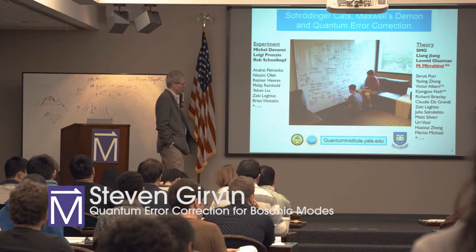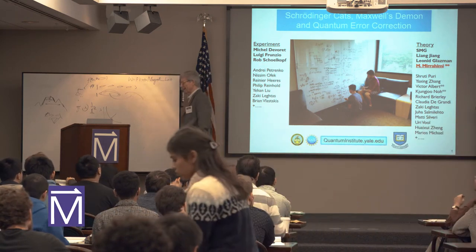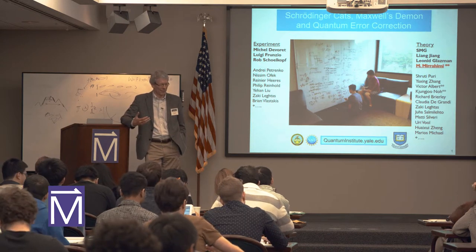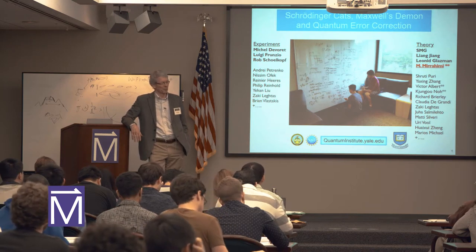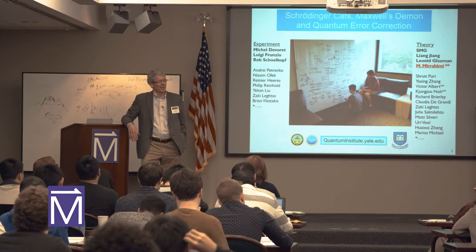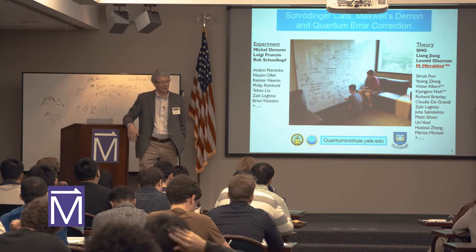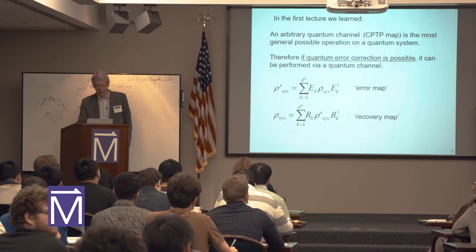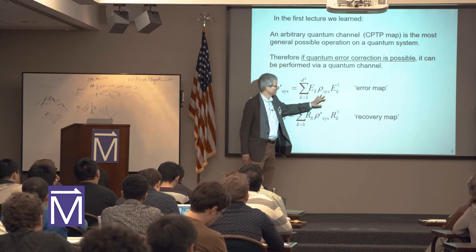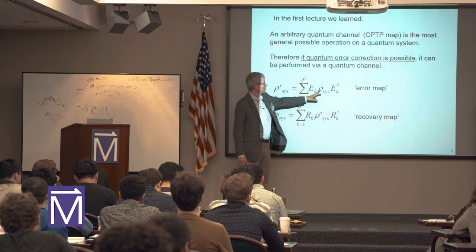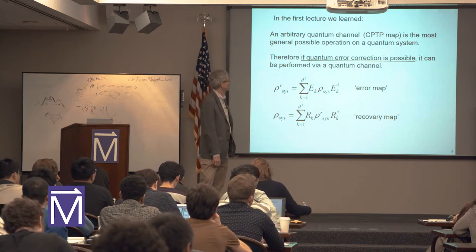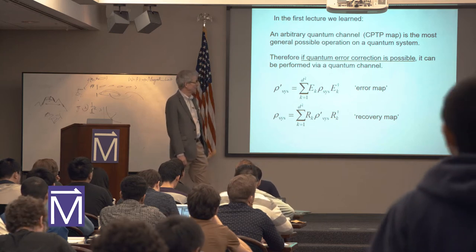We're going to continue the saga about quantum error correction. We were talking last time about quantum channels — a quantum channel is just a thing that transforms one state to another in the most general possible way. It might represent a communication channel, or what an imperfect quantum memory does when subject to various errors. It's a linear map on a system density matrix to a new density matrix.